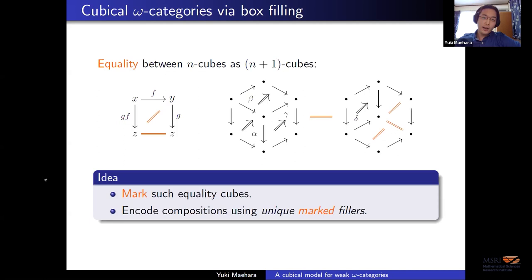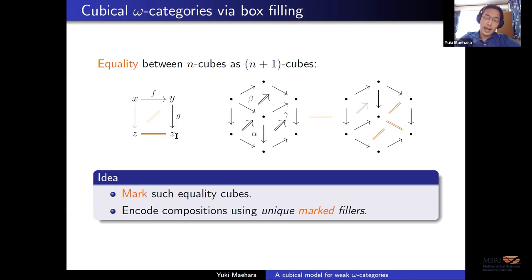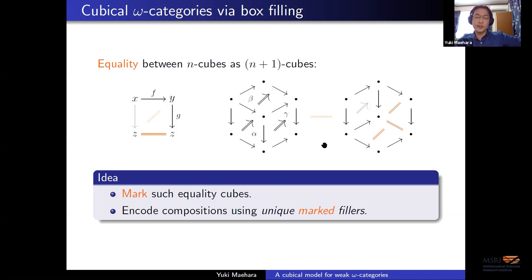The idea is to just mark these equality cubes in the nerve. Once you do that, you can encode compositions by requiring unique marked fillers for certain open boxes. If we require such an open box to have a unique marked filler, because we're requiring the interior to be marked, that says whatever this thing is in the filler should be the composite of these two things. So having a unique filler corresponds to having a uniquely defined composite.